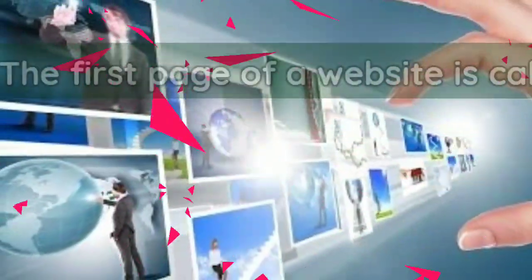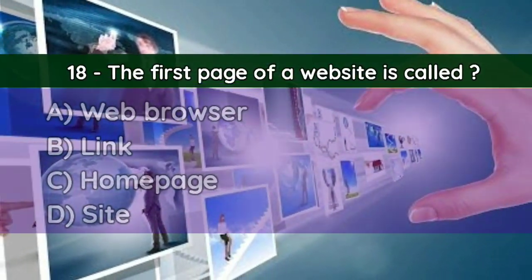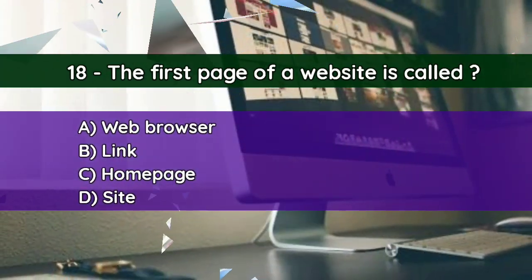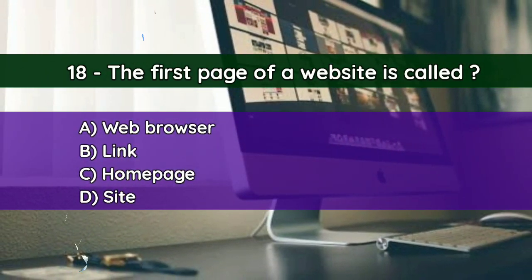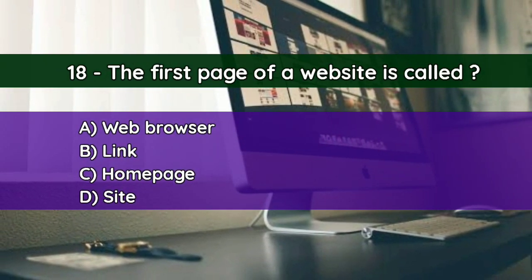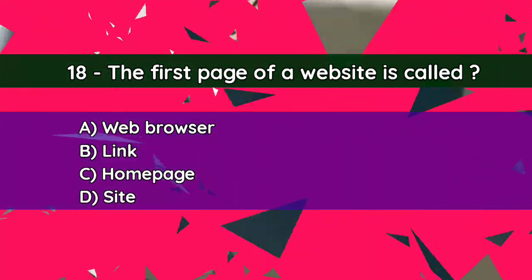Question number eighteen: The first page of a website is called — A. Web Browser, B. Link, C. Homepage, D. Site. And the correct answer is C — Homepage.